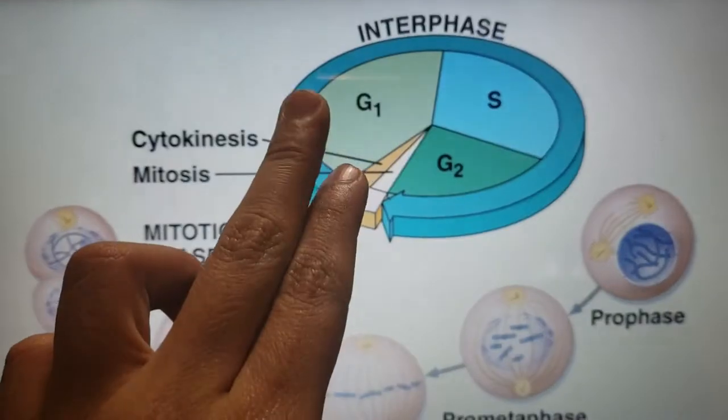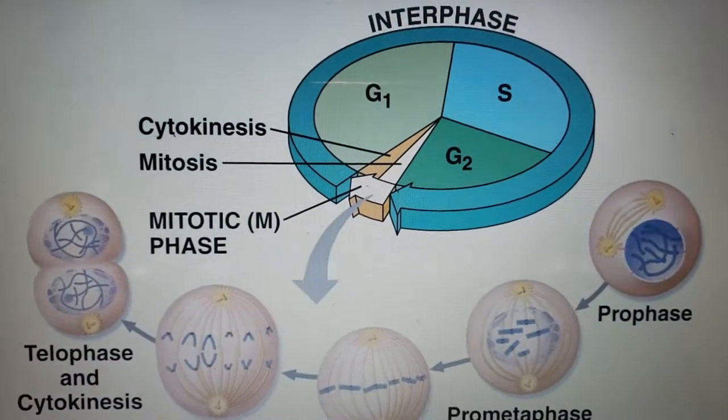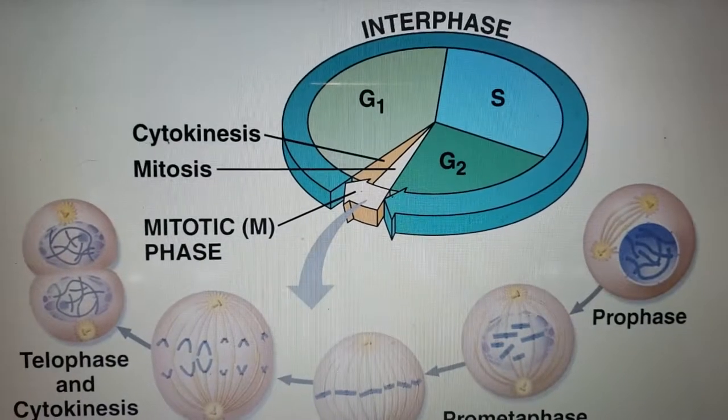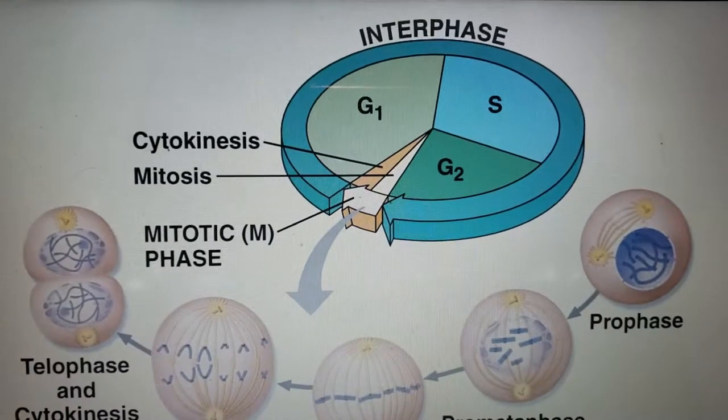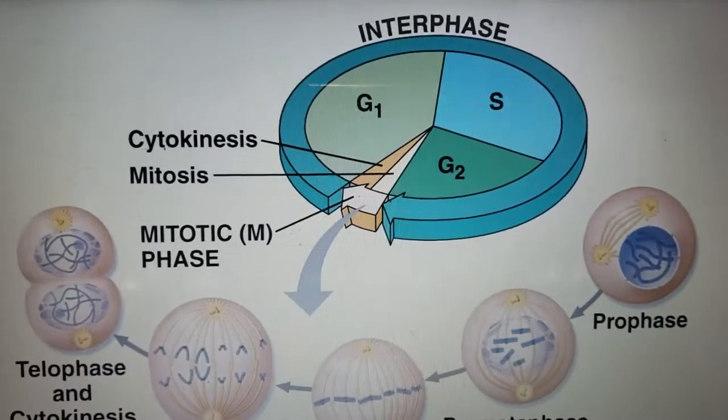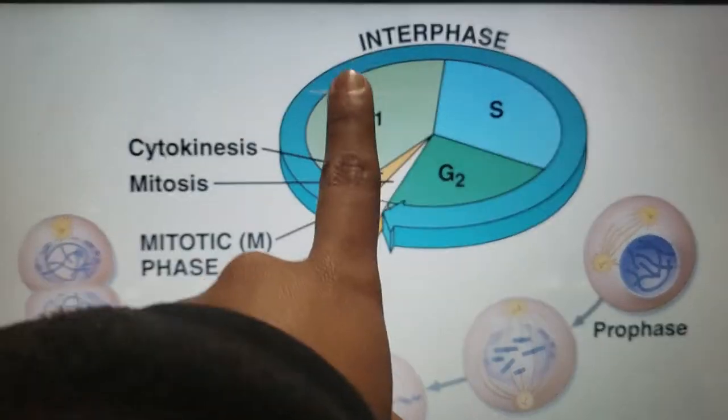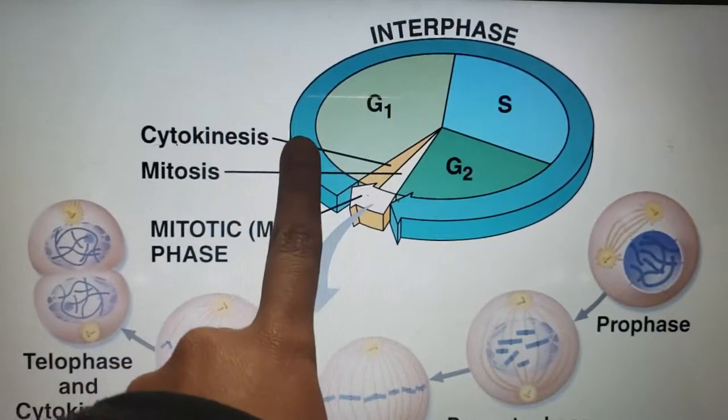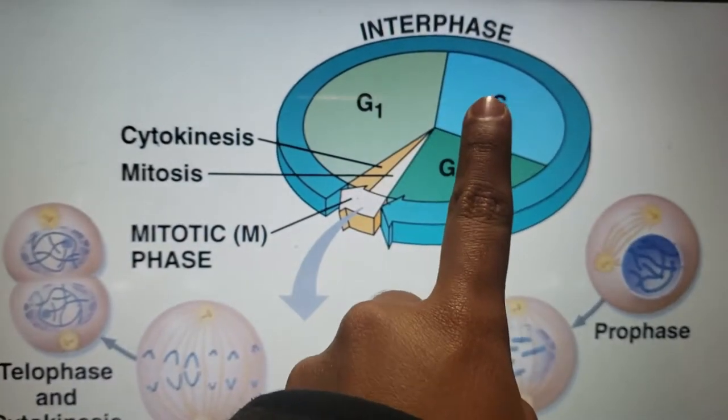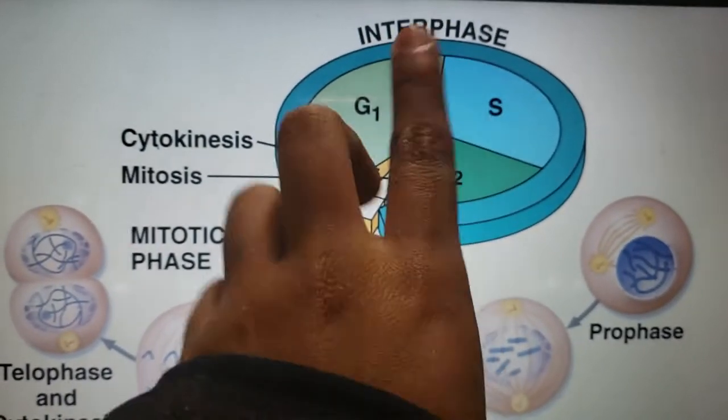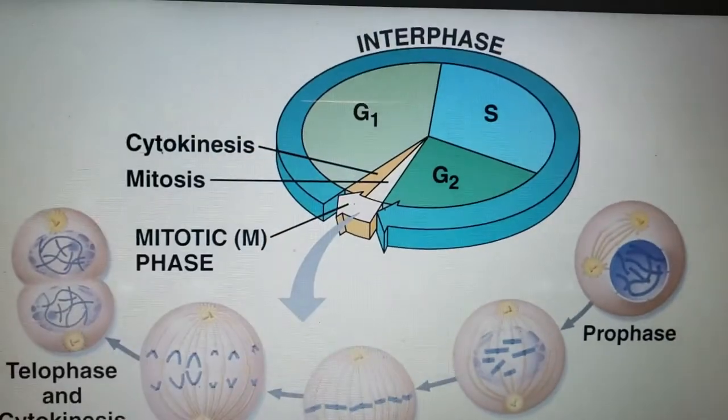In G1, the cell generates cellular energy, maintains homeostasis, and does regular work. There is one checkpoint in G1 to pass to the S phase. The cellular environment has to be adequate to support DNA synthesis.